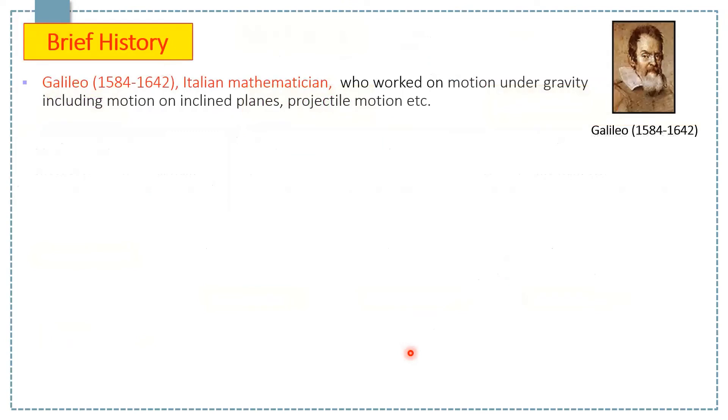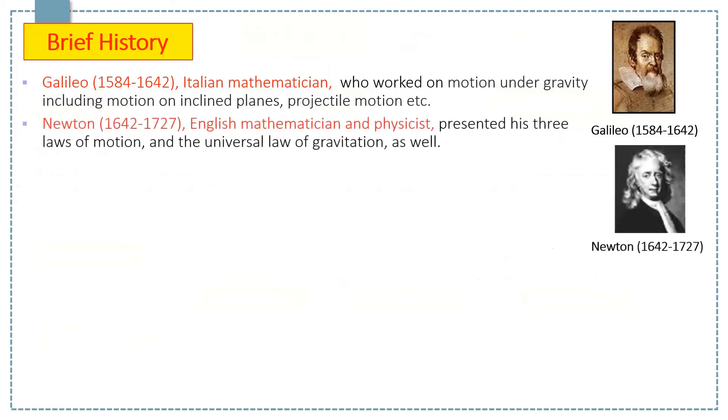Let's have a look at the brief history of classical mechanics. The fundamental physical laws and concepts were developed over the 17th century by Galileo, Newton, and others. Galileo was an Italian mathematician who worked on motion under gravity, including motion on inclined planes and projectile motion. Newton was an English mathematician who presented his three laws of motion along with the universal law of gravitation.